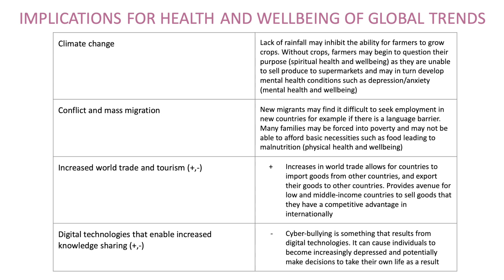Implications for health and well-being of global trends. The four global trends in the study design are climate change; conflict and mass migration; increased world trade and tourism, which has both positive and negative implications; and digital technologies that enable increased knowledge sharing, which also have both positive and negative implications. For climate change, a lack of rainfall may inhibit the ability for farmers to grow crops. Without crops, farmers may begin to question their purpose, as they are unable to sell produce to supermarkets, and may in turn develop mental health conditions such as depression or anxiety.